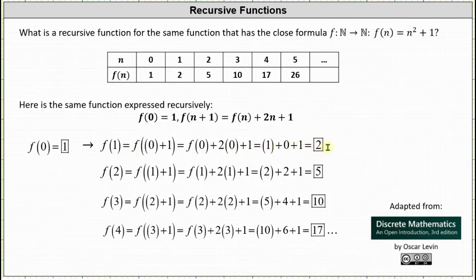Now that we know f(1), we can determine f(2). Notice for f(2), n = 1, giving us f(1+1) = f(2), which equals f(1) + 2(1) + 1. We know f(1) = 2, so f(2) = 2 + 2 + 1, which equals 5.